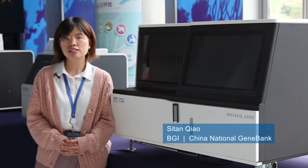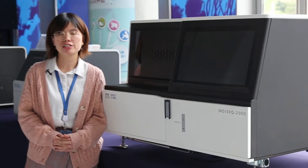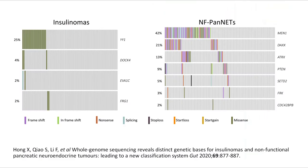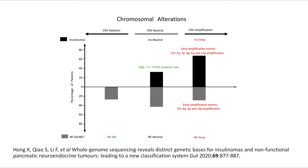The integrated analysis revealed distinctive copy number variation and single nucleotide variant patterns, reclassifying insulinomas and NF-PANETs into 5 molecular subtypes. The most frequently mutated gene was YY1 in insulinomas, while in NF-PANETs the key mutated genes were MEN1, DAXX, ATRX, TP53, and SETD2. Based on copy number variation, insulinomas were clustered into two groups — insulinoma amplification and insulinoma neutral — and NF-PANETs into three groups: NF amplification, NF neutral, and NF deletion, forming the 5 molecular subtypes.